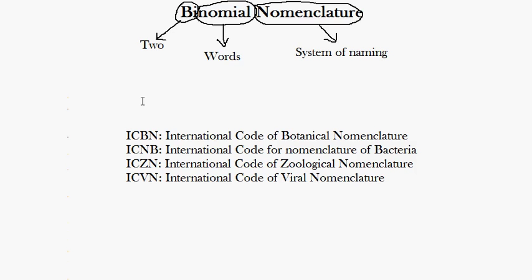Different groups were formed as a result. The first group was ICBN, or the International Code for Botanical Nomenclature, which dealt with the nomenclature of plants. This ICBN was later replaced by ICN, the International Code for Nomenclature, because as different kingdoms were discovered — such as fungi and protists — the ICN was expanded to cover plants, fungi, and protists.